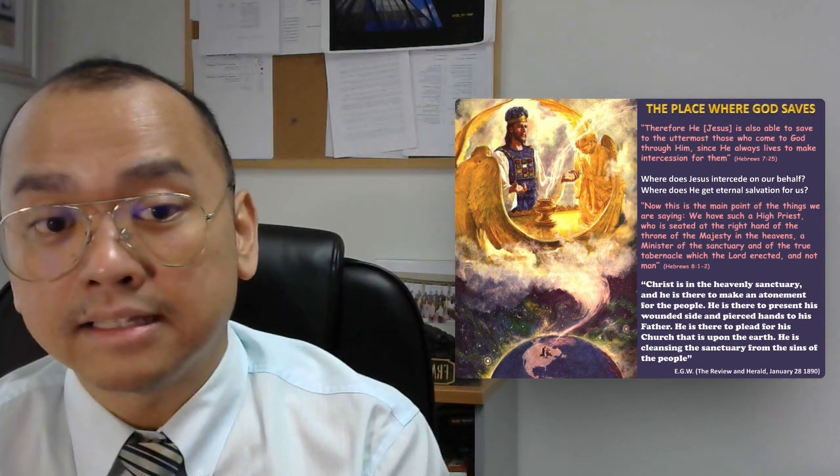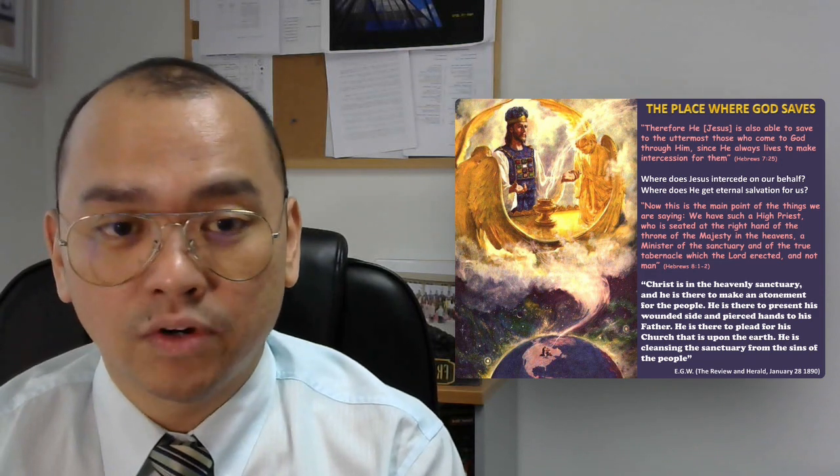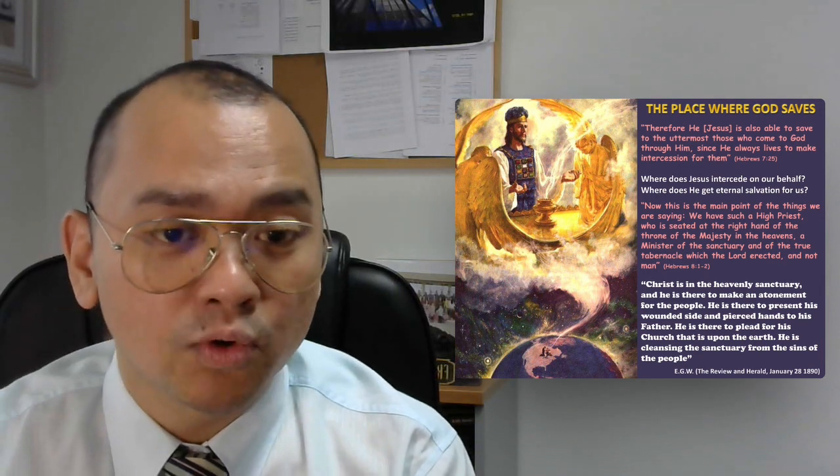In the Review and Herald by Mrs. White, January 28, 1890, she said: Christ is in the heavenly sanctuary, and He is there to make an atonement for the people. He is there to present His wounded side and pierced hands to His Father. He is there to plead for His church that is upon the earth. He is cleansing the sanctuary from the sins of the people.